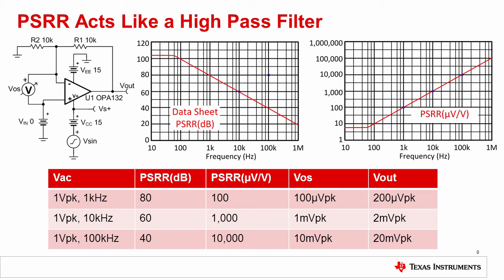In other words, the offset error will increase for higher frequencies. The table illustrates this point for a 1 volt peak AC supply signal at three different frequencies. We can see that with increasing frequency, the PSRR in decibels decreases while the PSRR in microvolts per volt increases. Furthermore, the offset error introduced by the power supply signal increases at higher frequencies.